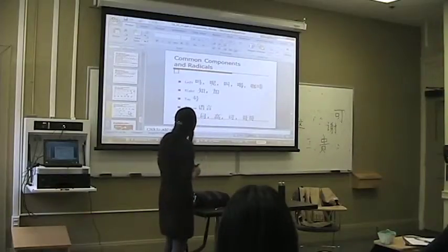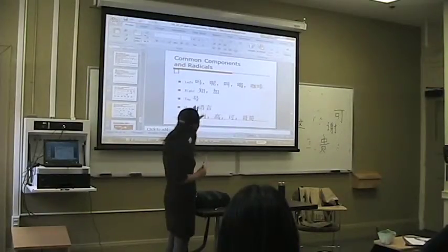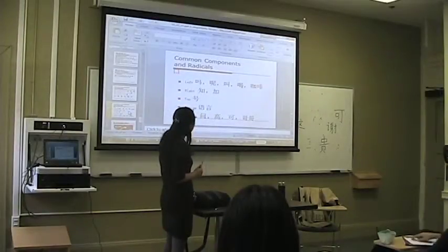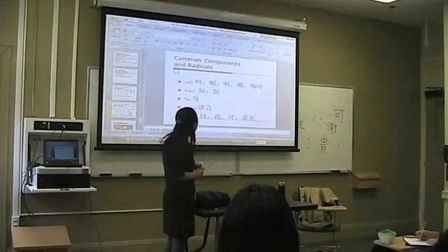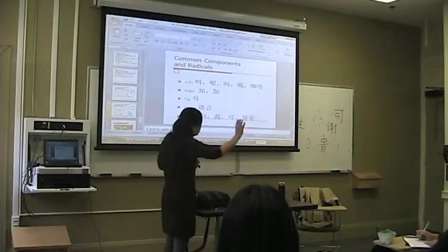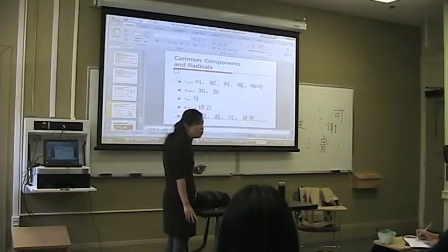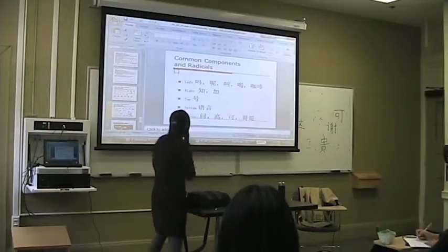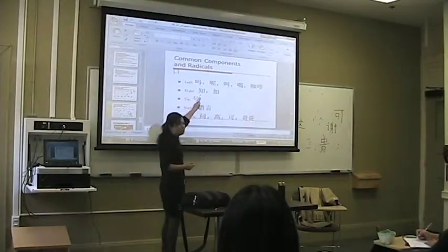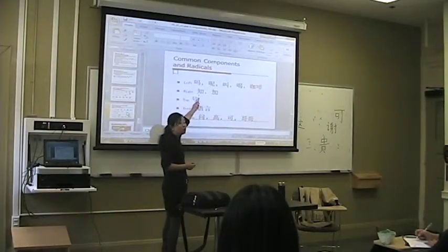So the first one uses that radical on the left side, right? What's the first one? You can also use it on the right side. What's the first one? To know — 知. This one: 知, to know.